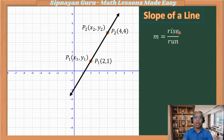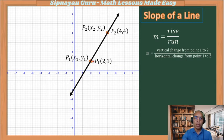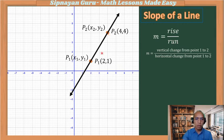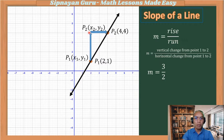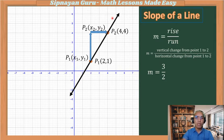The slope is rise over run — the vertical change from point one to point two over the horizontal change from point one to point two. Using point one as our reference, how many units does it take to reach point two? The vertical distance from this point up to the second point is 3 units going up, and the horizontal distance is 2 units going right. It is positive 3 because we go up, and positive 2 because we go right. So the slope is positive 3 over 2.